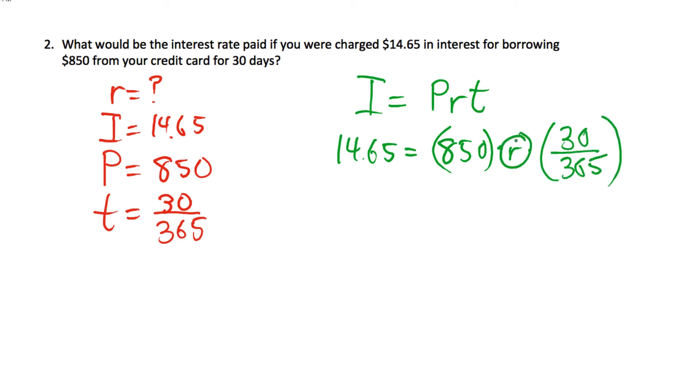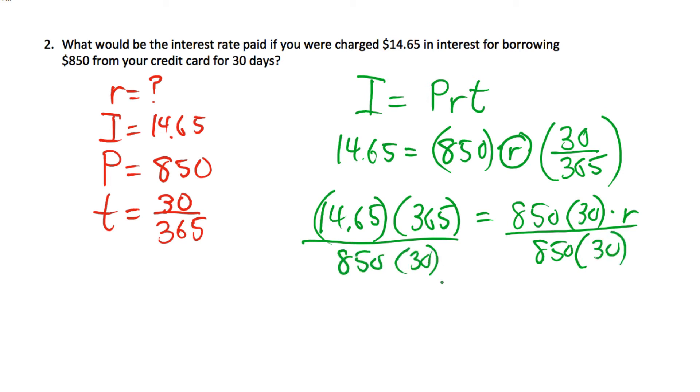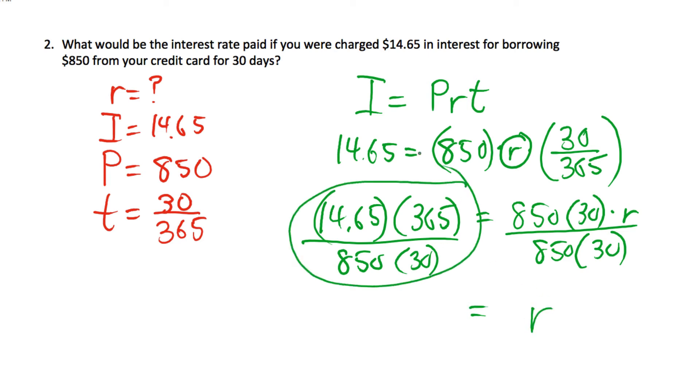And to isolate r, we could multiply both sides by 365 and then divide both sides by 850 times 30. And so my interest rate as a decimal will be this calculation.